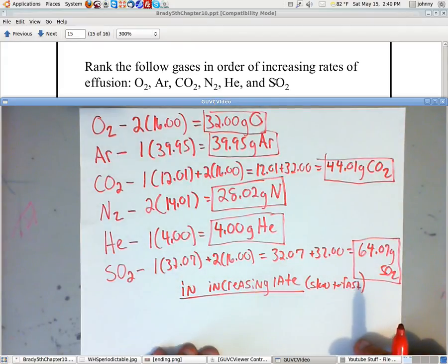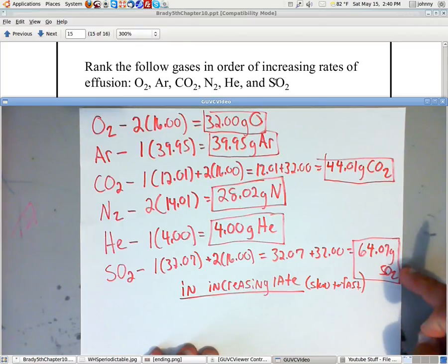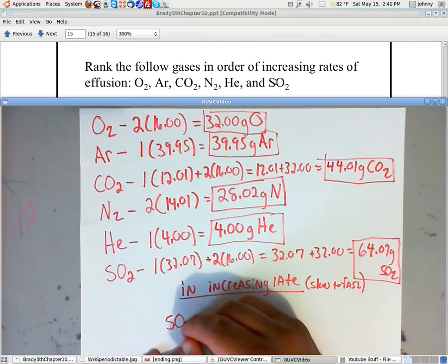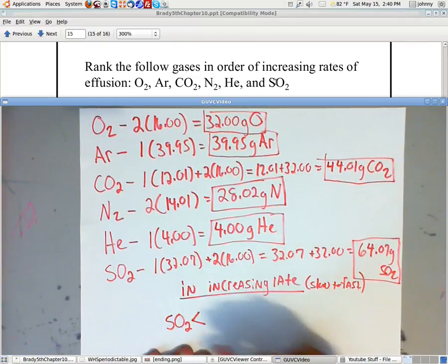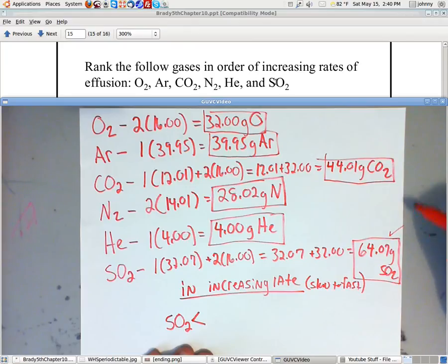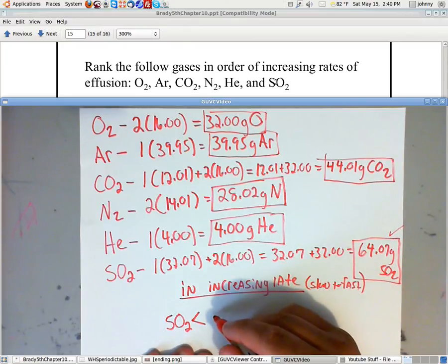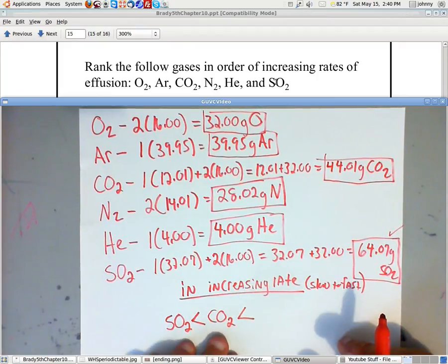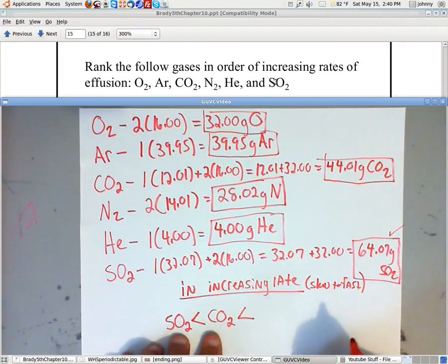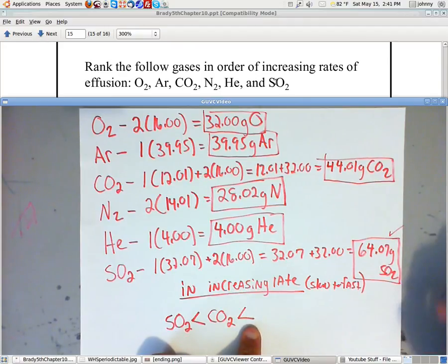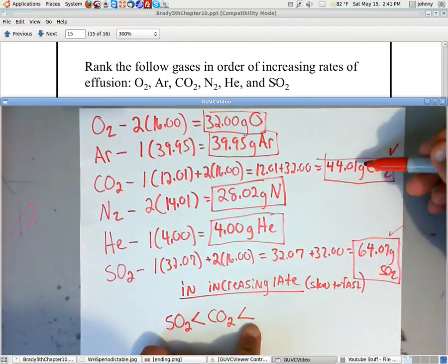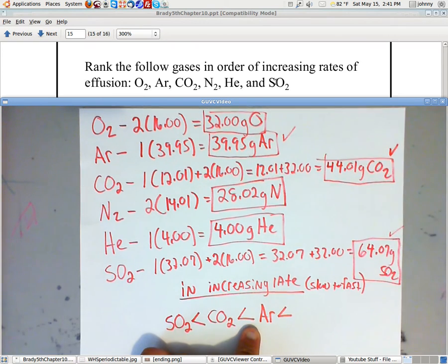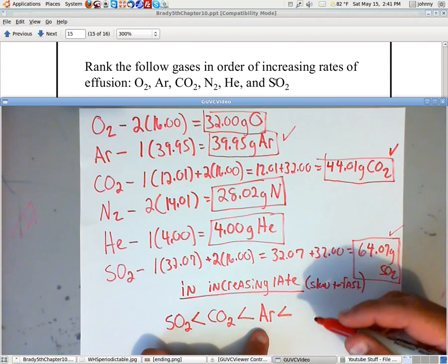So looking at these, the slowest, well, it looks like it'd be the 64, doesn't it? Yep. So it'd be SO2 is the slowest. The next slowest would be what? I see 44.01. That's the CO2. What's after that? Well, what's just a little bit faster than CO2? Is there anything close to 44.01? Yes, argon. Ar. Anything else? I see 32 right here on oxygen. So O2 would be.